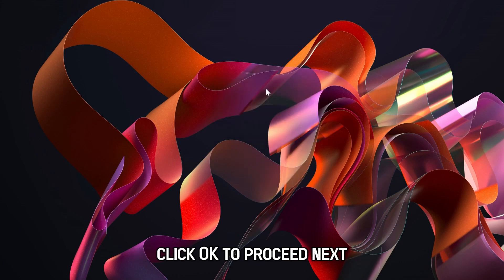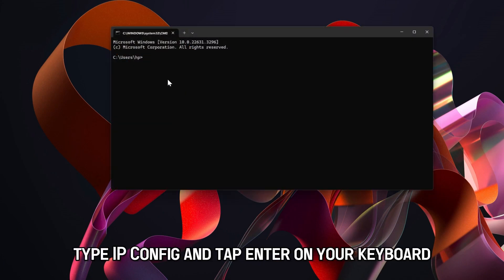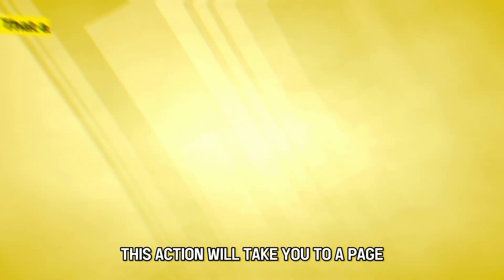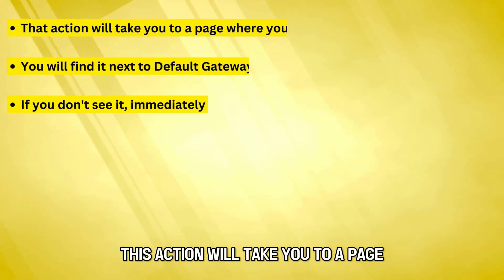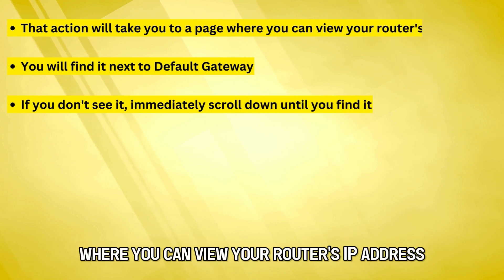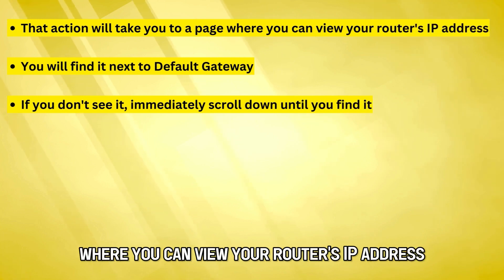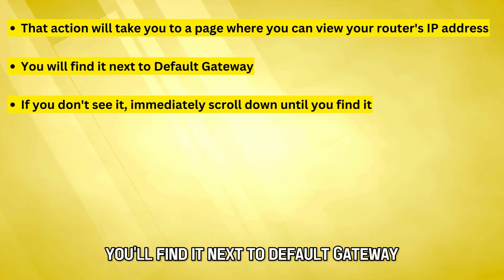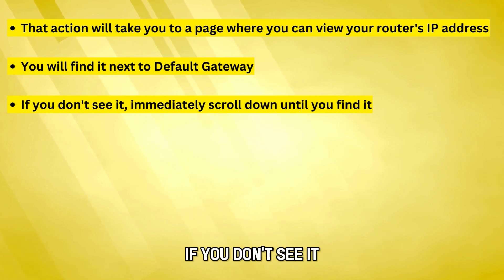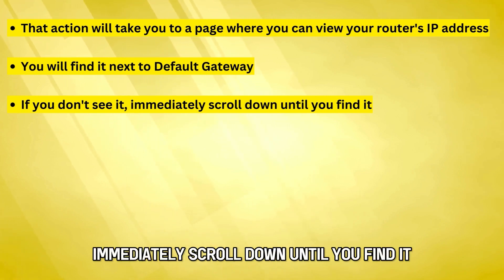Next, type ipconfig and tap Enter on your keyboard. This action will take you to a page where you can view your router's IP address. You'll find it next to Default Gateway. If you don't see it, scroll down until you find it.